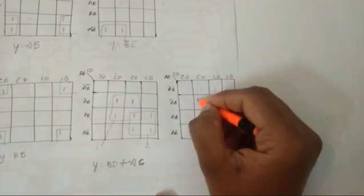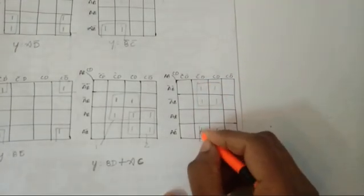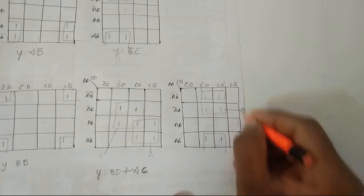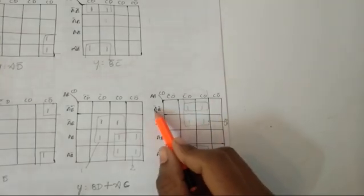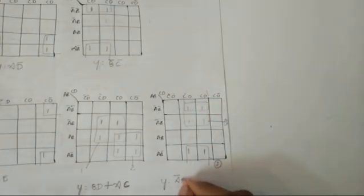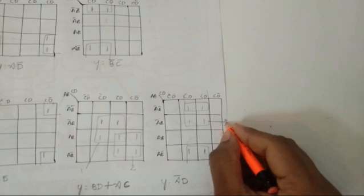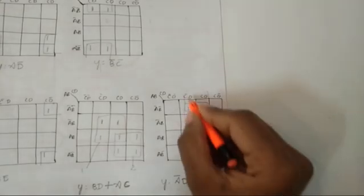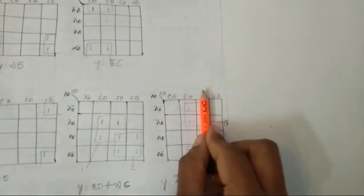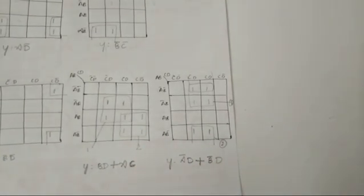For the second quad, I look for the unchanged variable. It is A here and C here, so the answer for this portion is BD + AC. In another special overlapping case, I take group one and group two. For the first quad the unchanged variables are Ā and D, giving ĀD. For the second quad, the unchanged variables are B̄ and D, giving B̄D. Final answer: y = ĀD + B̄D.